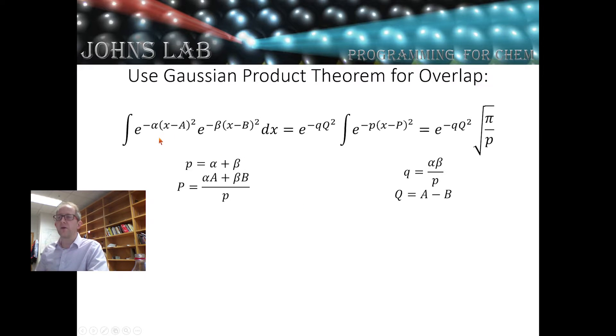If I have a Gaussian at a with exponent alpha and a Gaussian at b with exponent beta, when I multiply them together, I get a new Gaussian with exponent lowercase p, which is just alpha plus beta.